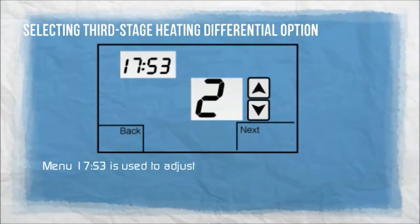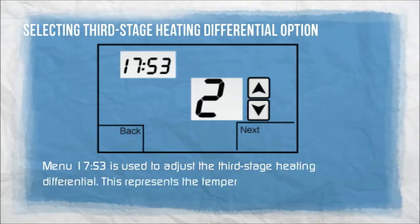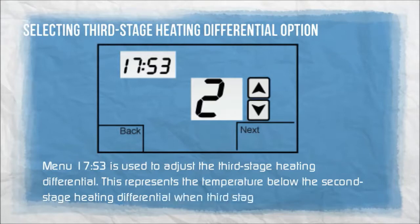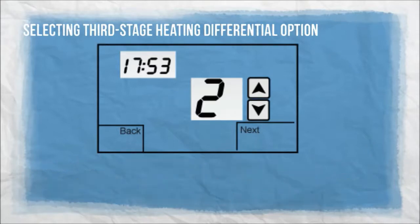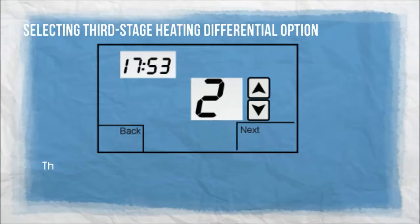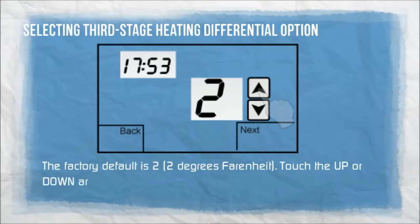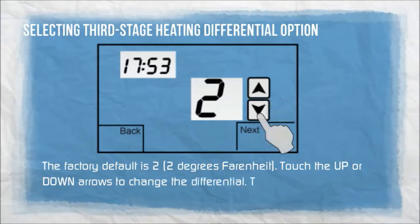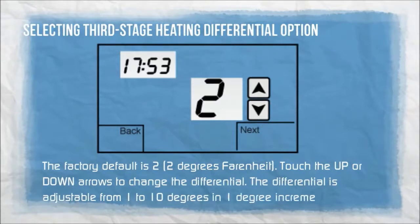Menu 17S3 is used to adjust the third stage heating differential. This represents the temperature below the second stage heating differential when third stage heat is energized. There is a three-minute time delay before third stage heat is energized. The factory default is two degrees Fahrenheit. The differential is adjustable from one to ten degrees in one degree increments.